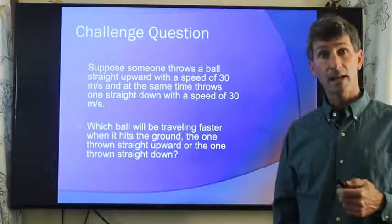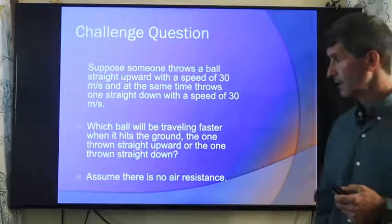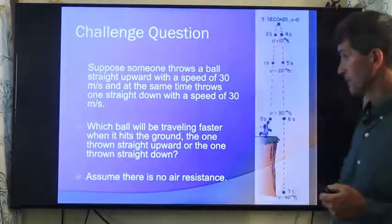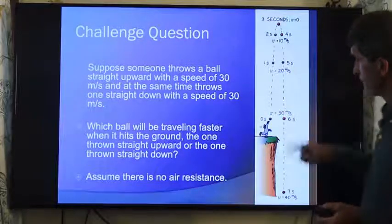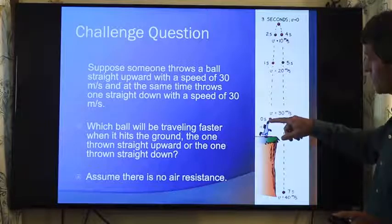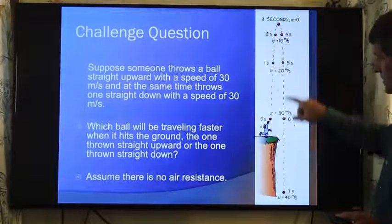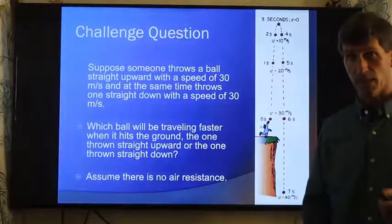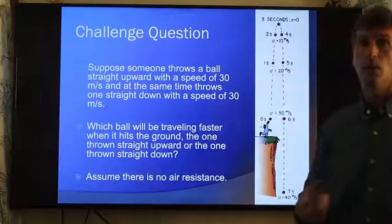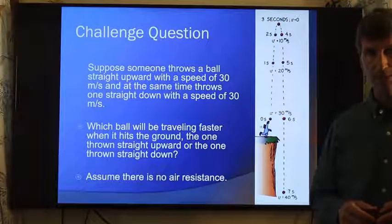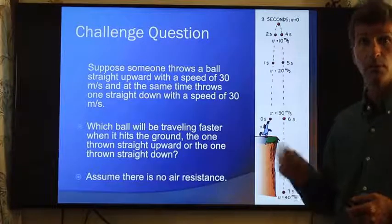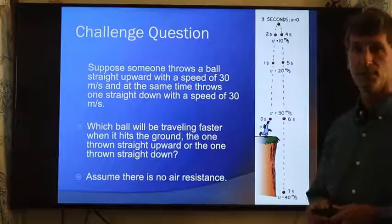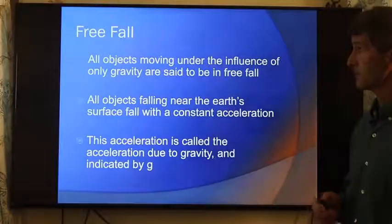Well, the answer would be, both would hit the ground at the same speed. I'm sorry, not at the same time, but the same speed. The reason for this is, if you throw something up at 30 meters per second without air resistance, it reaches that same point again, going downward, also at 30 meters per second. So throwing it down at 30 meters per second, or throwing it up at 30 meters per second, without air resistance, it's going to hit the ground with the same speed.